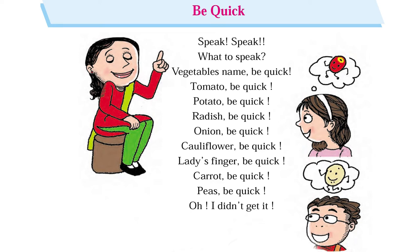I'll explain this poem. In this page you can see one teacher is sitting and she is teaching something. One girl said 'tomato be quick,' the next boy said 'potato be quick,' another said 'radish be quick,' another said 'onion be quick,' 'cauliflower be quick,' 'lady's finger be quick,' 'carrot be quick.' But the last child said 'oh, I didn't get it' — the last child couldn't answer.